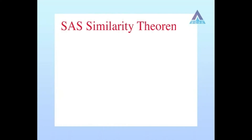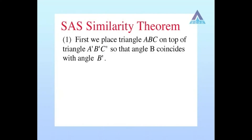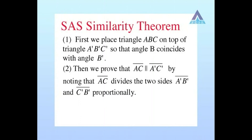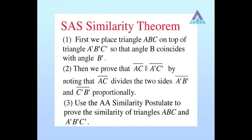The step-by-step procedure for proving the SAS similarity theorem: Number one, place triangle ABC on top of triangle A'B'C' so that angle B coincides with angle B'. Number two, prove that side AC is parallel to side A'C', noting that side AC divides sides A'B' and C'B' proportionally. Number three, use the AA similarity postulate to prove the similarity of triangles ABC and A'B'C'.